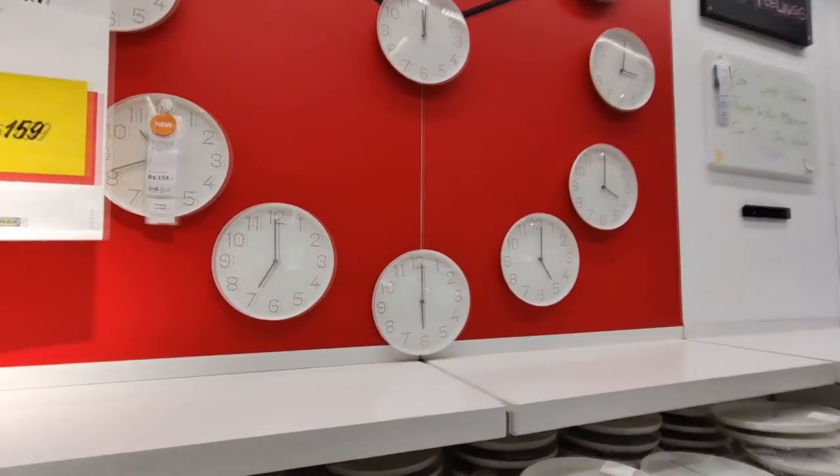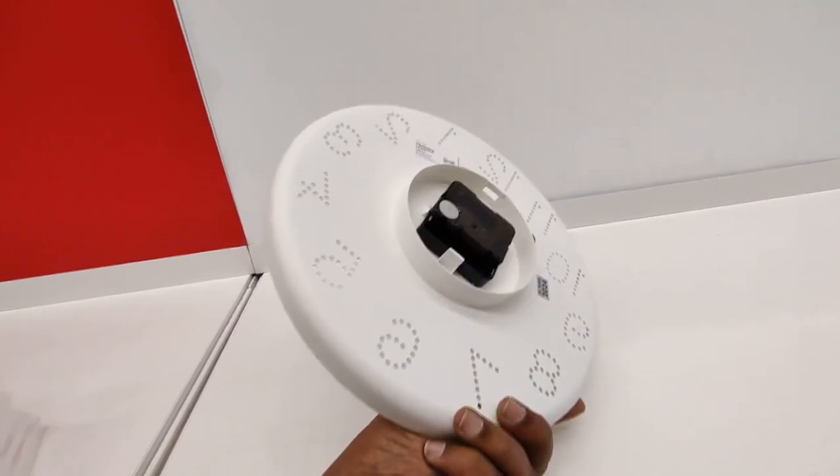I found this unique clock which is less than two dollars, some 150 rupees, and it has holes on the numbers. I thought why not put some light at the back of it so that it would project the numbers or the clock on the wall.